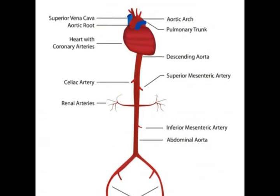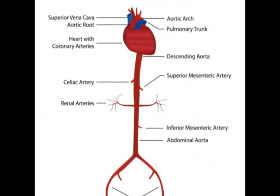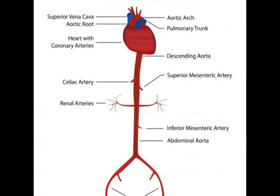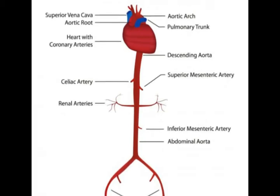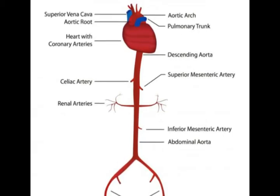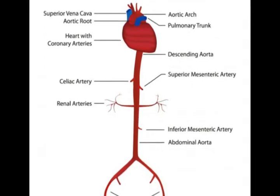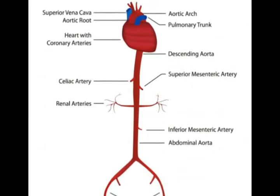The aortic sinuses are located in the ascending aorta. The three sinuses are situated in between each joining point of the aortic valve. Opposite the sinuses are the cusps of the aortic valve. The last aortic sinus ends at the sinotubular junction in the aortic root, where the aorta becomes a cylinder, or tube-like structure.